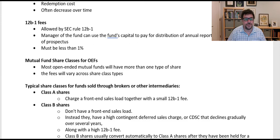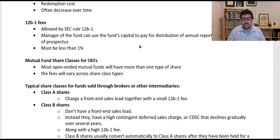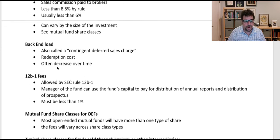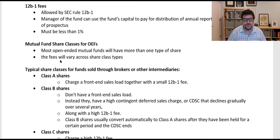12B1 fees are special fees allowed by SEC Rule 12B-1, which is why they're referred to by that rule number. The manager of the fund can use the fund's capital to pay for the distribution of annual reports and prospectuses. These must be less than 1%. They are different from management fees in that they pay for different things, but from the investor's standpoint, we just add them together, because what the manager uses the money for when they take it from us is irrelevant.